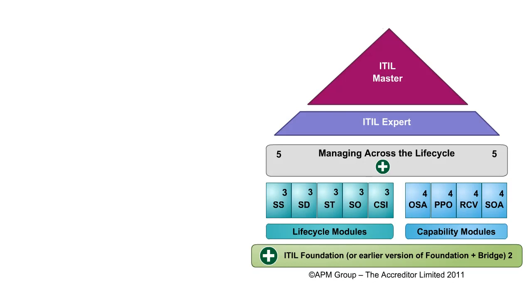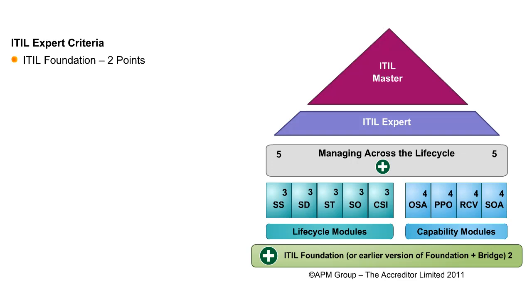Let us have a brief look at the ITIL Certification Path. The diagram in this slide is the graphical depiction of the ITIL Certification Path, which is based on a credit point system. You need to accumulate credit points at each stage till expert. ITIL Foundation is the first certification, which gives you two credit points. On completion of the foundation level, you become eligible to appear for the intermediate level where you can choose from two streams: Lifecycle and Capability.